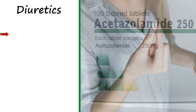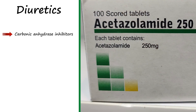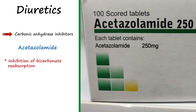The first class are carbonic anhydrase inhibitors. Acetazolamide is the prototype agent in this group. Their site of action is the first part of the nephron, or proximal convoluted tubule. These drugs result in the inhibition of bicarbonate reabsorption in the tubular lumen, which leads to the retention of bicarbonate in the lumen and alkalinizes the urine.